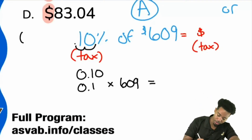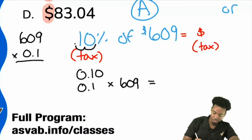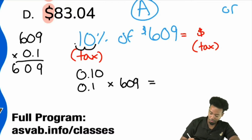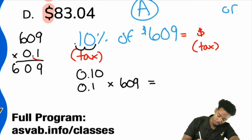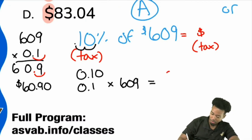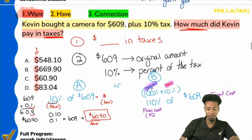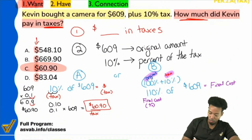This is going to be pretty straightforward: we have 609 multiplied by 0.1. So 9 times 1 is 9, 0 times 1 is 0, 6 times 1 is 6. Then how many decimal places do we move back? That would be one decimal place only. And that would be $60.90 — that is the amount of the tax. You see how that gets you the final answer right there straight away.